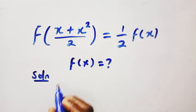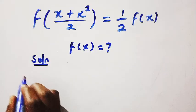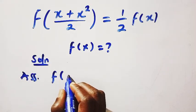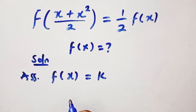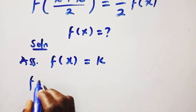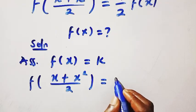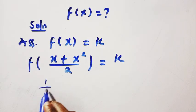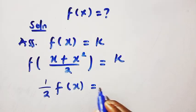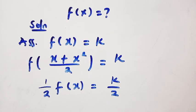When we consider the solutions, the first step we are going to take is we are going to check for the constant solution. If I assume f of x to be equals k, assuming a constant value, so this tells us that f of x plus x squared over 2 also equals k. So therefore, the right-hand side, which is 1 over 2 f of x, will become k divided by 2. After obtaining this, we are going to equate these together.